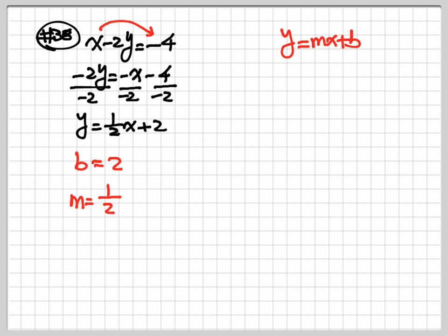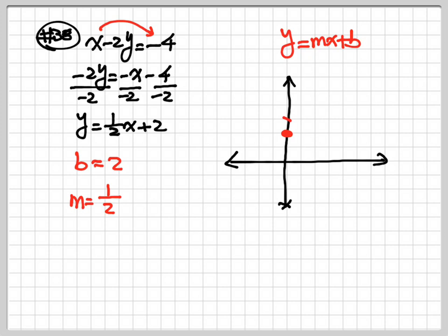Then after that, we are going to graph. Always go to your b first. b is always on the y-axis. So b equals 2 — that's my starting point. Now my slope: numerator is positive 1, so from that point I go up 1 space. Denominator always goes to the right, so go right 2. That's my ending point. After that, draw a line to connect the two points.